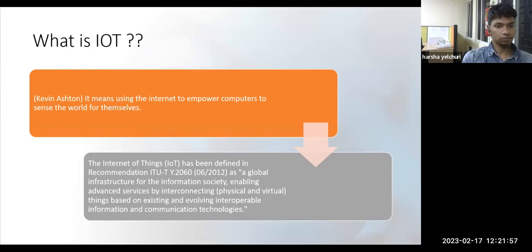Kevin Ashton's definition of IoT is using the internet to empower computers to sense the world for themselves. The key thing to note here is there are no humans involved in this loop. Generally humans are the ones triggering things, but according to his definition, not anymore. For example, if it's sunny outside and you want your window shades to come down, you could put a sensor looking outside, sensing light intensity, and communicating this information to another sensor attached to the shades.